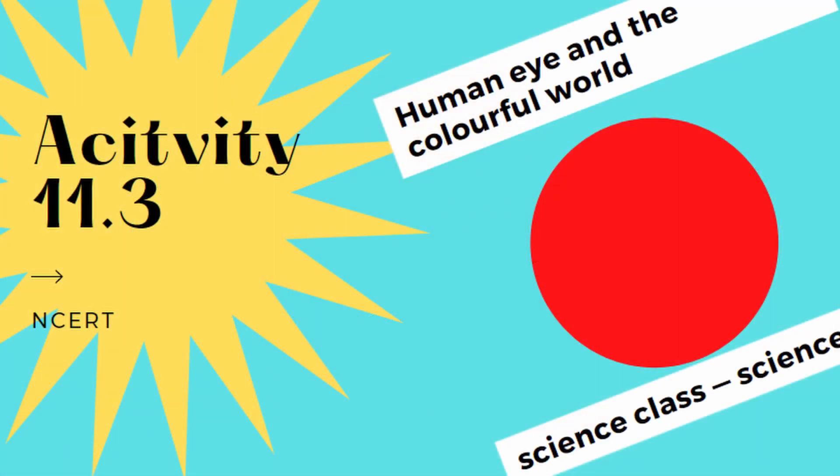If you look at CBSE class 10 examination, this is a very important activity. If you understand this activity, there are many phenomena such as blue color of the sky, red color of the sun during morning, sunrise and sunset. You will understand all of these things properly.